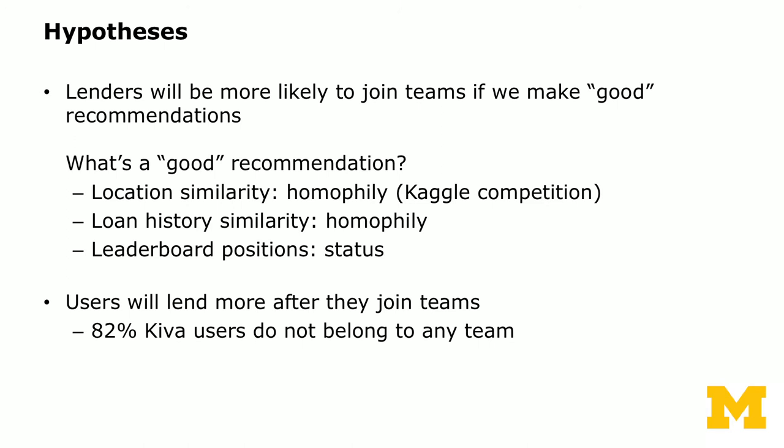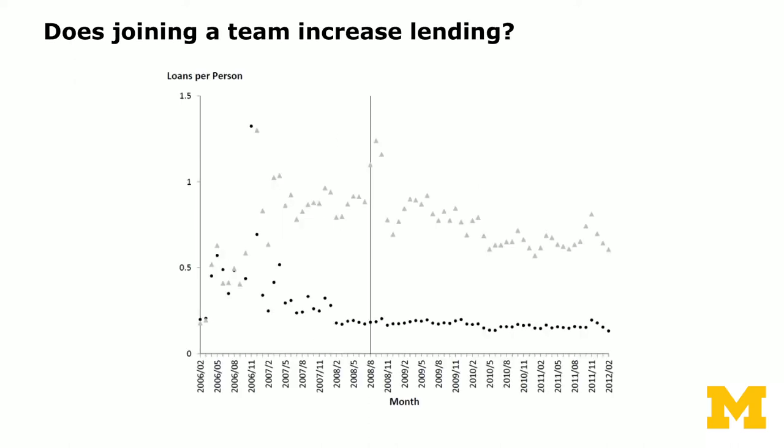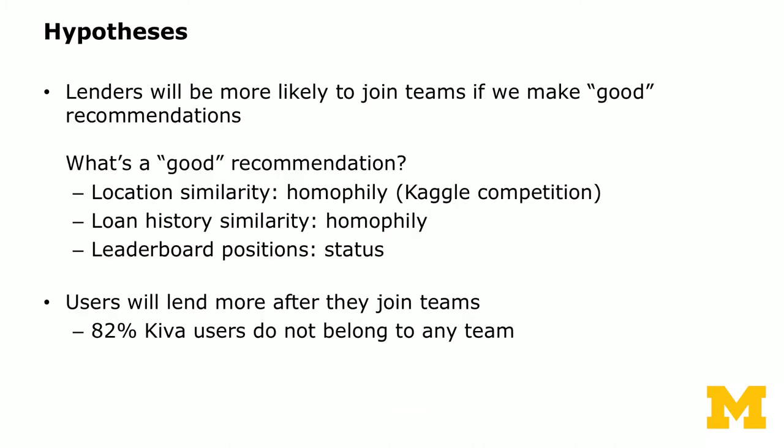Our hypothesis is that lenders will be more likely to join teams if we make good recommendations. At the time of the experiment, 82% of Kiva users did not belong to any team. If you do simple empirical analysis with OLS, the team dummy — the fact that someone belongs to a team — is hugely important. But since joining a team is endogenous, running OLS probably gives a biased estimate. So this experiment is about ex-ante generating an instrument and estimating the effect of joining teams.